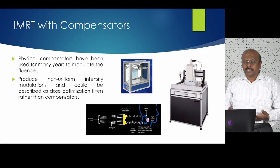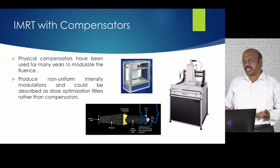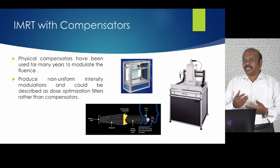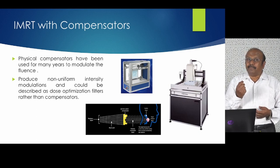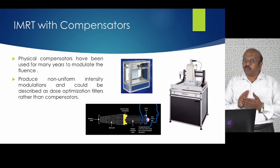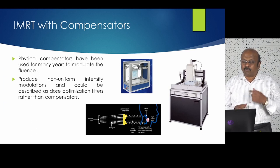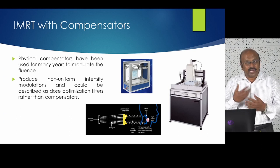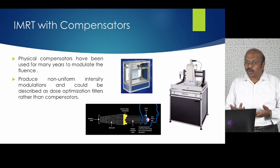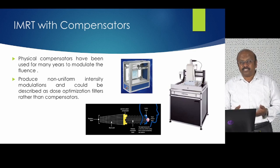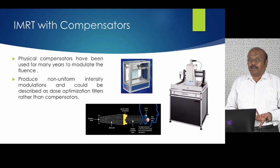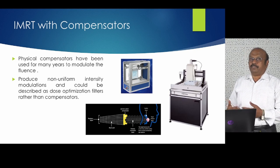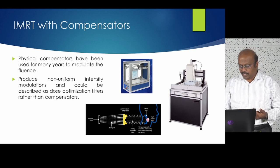When you use a compensator, you physically have to make one per beam — for a 7-beam IMRT, you make 7 compensators. The advantage is you don't worry about beamlet size and can make it very smooth. But the disadvantages are many: you must make one for each field, replace the correct compensator for each field, find storage for all days of treatment, and reuse them regularly. Multi-leaf collimator-based delivery is much more convenient.